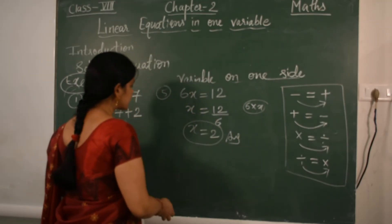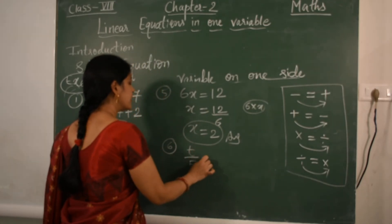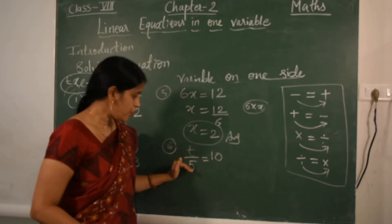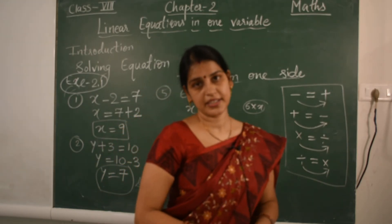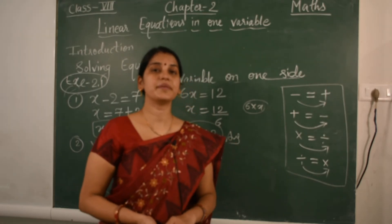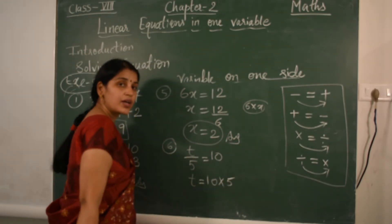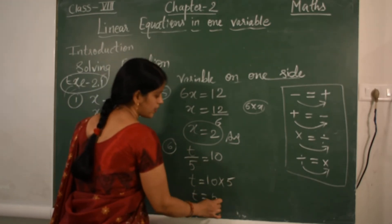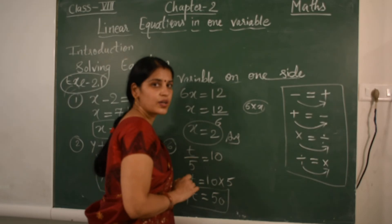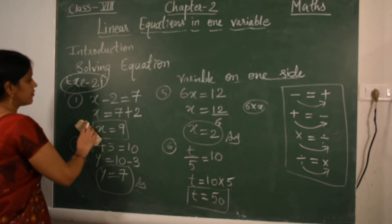The sixth one: T upon 5 equals 10. T upon 5 means it is division. When we transpose to the right-hand side, division becomes multiplication. So T equals 10 multiplied by 5, which is 50. So the answer of the variable is 50.